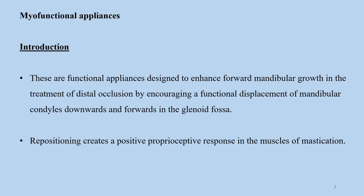As already discussed in the previous lecture, you understood about the treatment principles and how functional appliances work by force application and force elimination. For today's introduction, functional appliances are designed to enhance forward mandibular growth in the treatment of distal occlusion by encouraging a functional displacement of mandibular condyles downwards and forwards in the glenoid fossa. This is how skeletal and dento-alveolar changes take place. They also reposition the muscles of mastication and create a positive proprioceptive response, thereby affecting further changes.